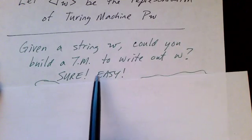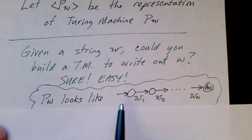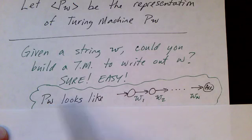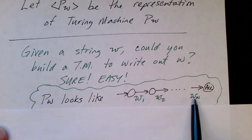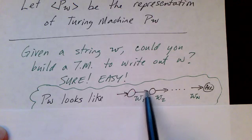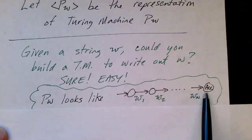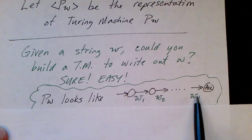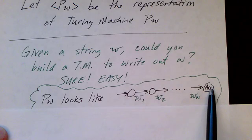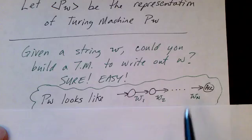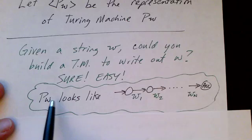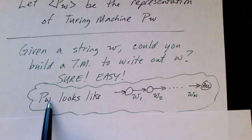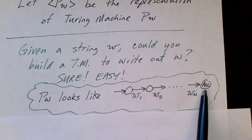If I give you a string W, could you build a Turing machine to write out W? Yes — it'd be easy. Let's say there were n characters in W. P sub W would just be a linear sequence of states with an accept at the end. If our string was one zero one one zero, we would have a transition that writes the one, a transition that writes the zero, and so on. If our string has n characters, our Turing machine would have n plus one states organized as a simple chain.